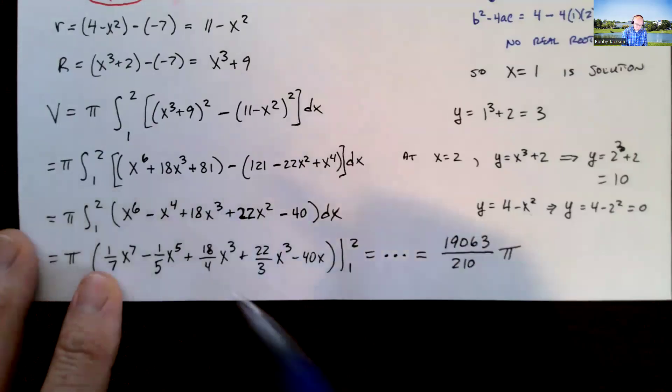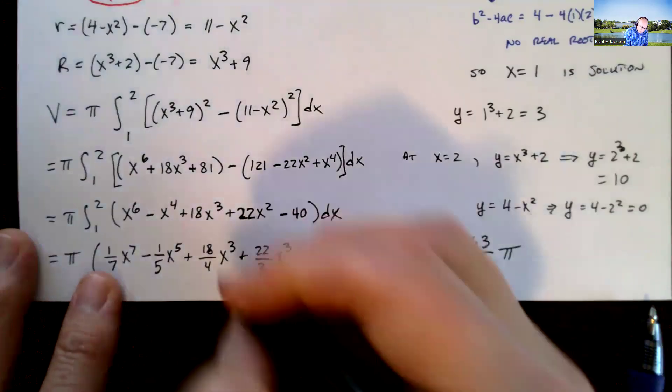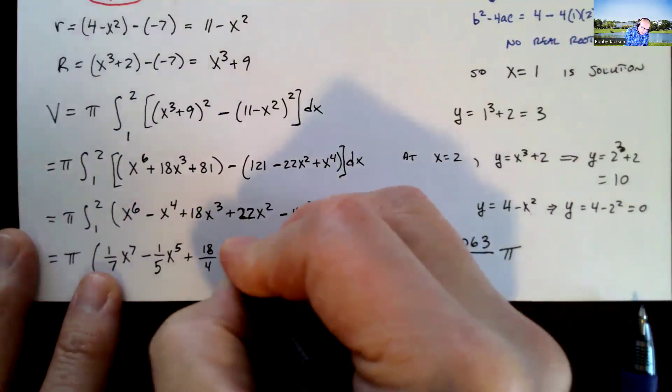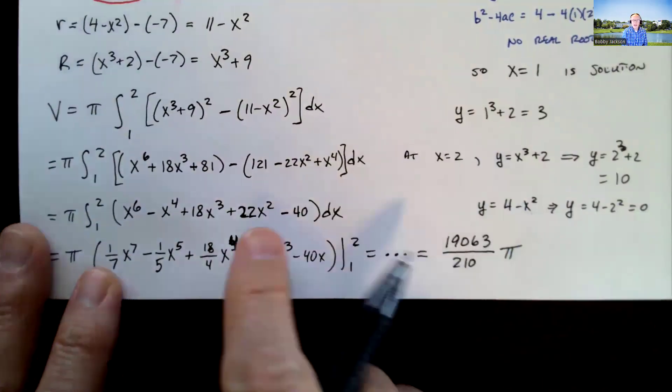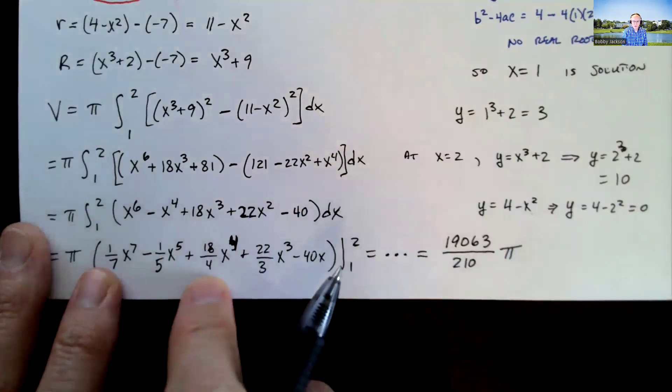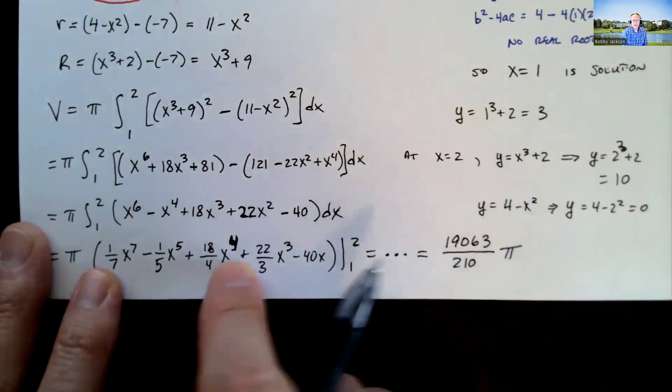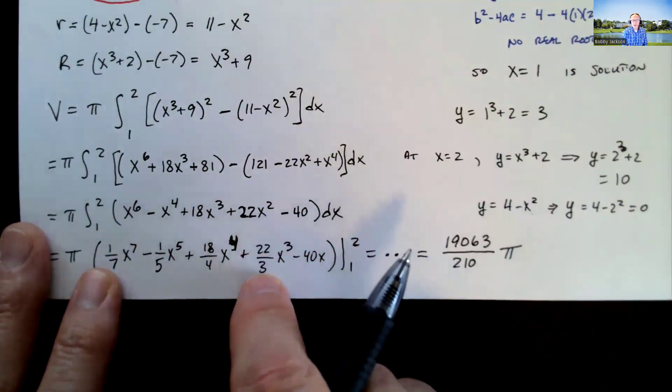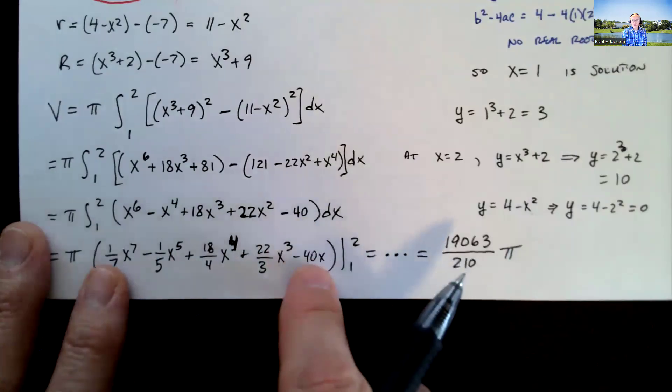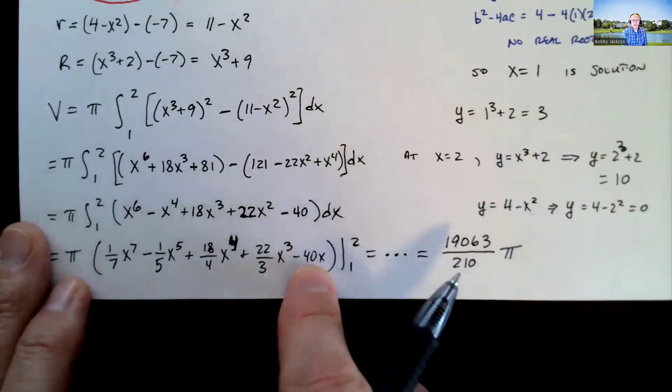And this is 22 3rds x cubed. Sorry, that should be x to the 4th. I'm just going too fast. That should be 18 x to the 4th over 4, 9 halves x to the 4th. This is 22 3rds x cubed, and then the antiderivative of 40 is 40x.